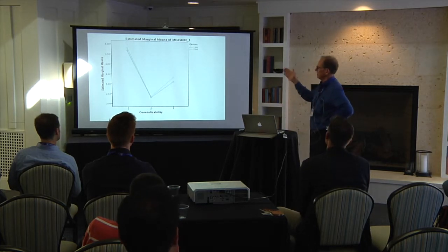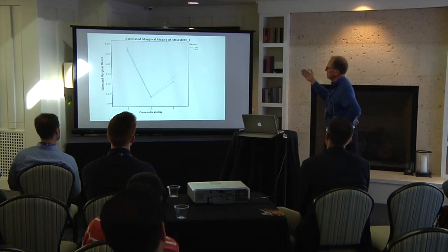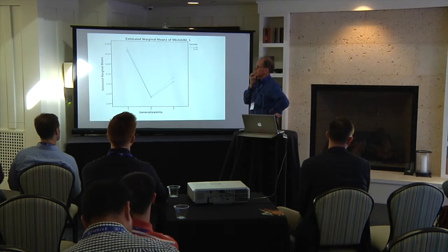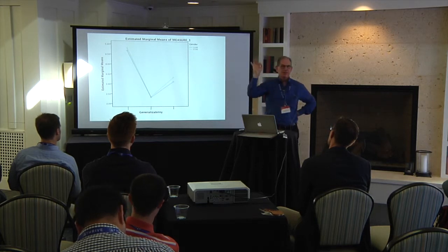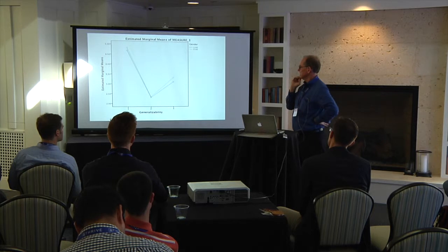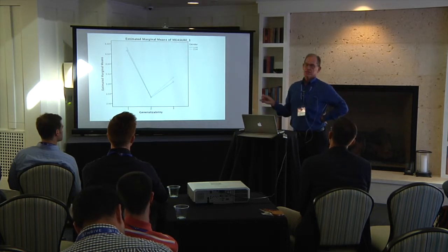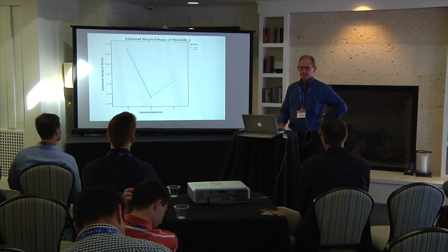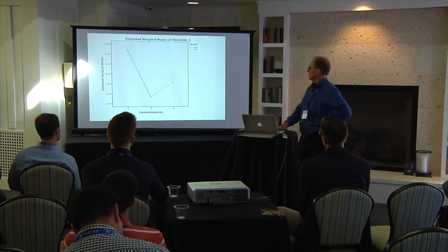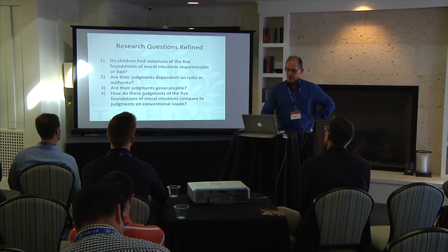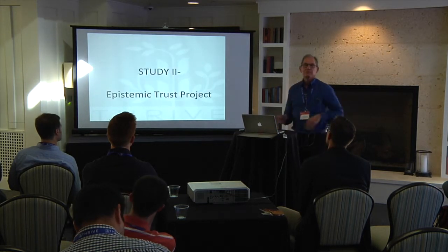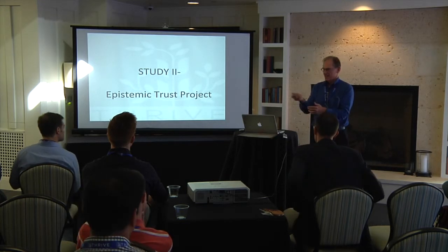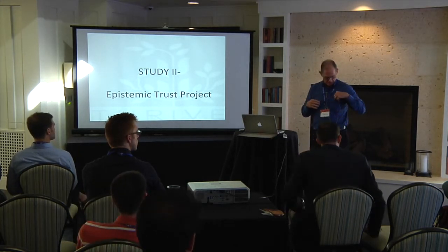By gender, we got the same results. So it appears children rated the scenarios about justice/fairness and harm/care as the most moral violations — the highest moral violations. The conventional violations were not considered moral violations. The three others — purity/sanctity, in-group/out-group, and authority/respect — fell somewhere in the middle. That was our result from that study. Now we have these scenarios to tell the kids and ask them whom do they trust. Matt is going to tell you about that part of the study.